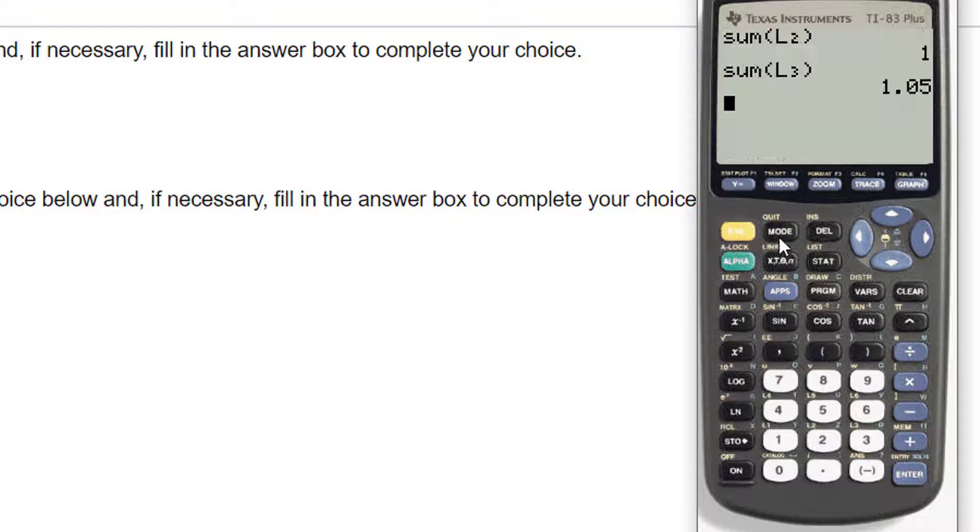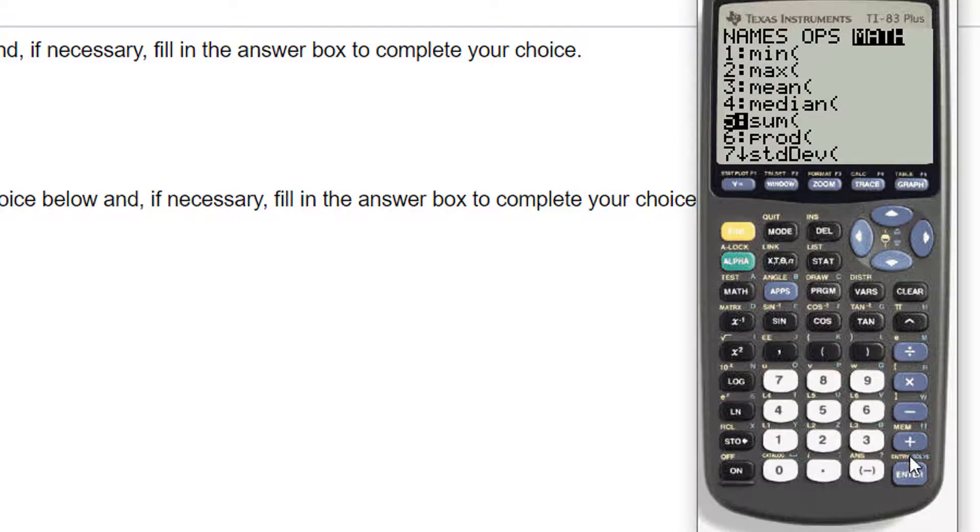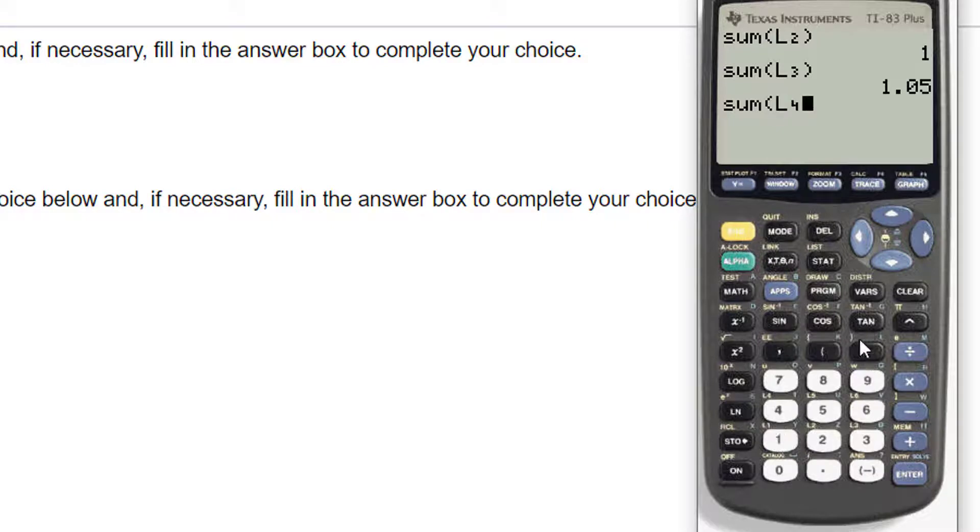So second quit. So the formula for standard deviation is the square root of this, but I'm going to go ahead and do the variance first, which says take the sum of those x squared times probability of x. So second stat, math, sum, and this is now in L4. So second L4. So that adds up all of the random variables squared times the probabilities. And what that ends up giving me is just that sum.